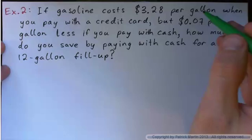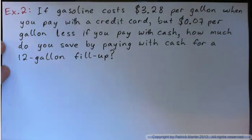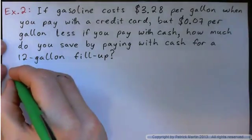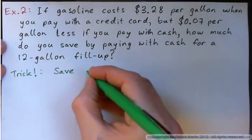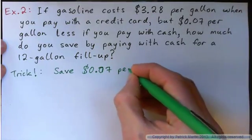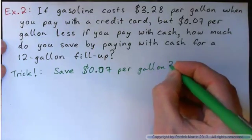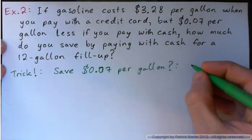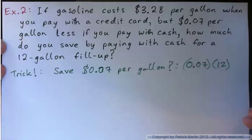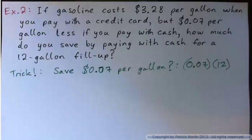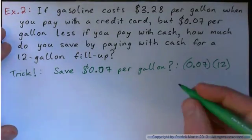So, gasoline costs $3.28 per gallon, 7 cents less if you pay with cash. There's a few ways of figuring this out. How much do you save? Well, let me give you a trick. Do you save 7 cents per gallon? Right? Well, isn't that 7 cents times 12? Because you've got 12 gallons, right? If you get 10 gallons with cash, you're going to save 70 cents. It's 0.7 times 10, right? So, that would be a quick way to figure it out.